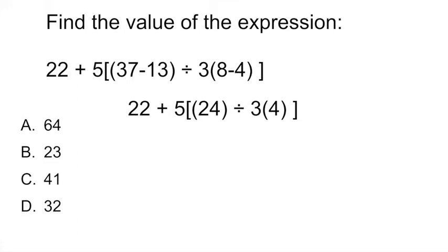The second thing on order of operations was exponents. We don't have any. And then multiplication. So we're going to multiply that 3 times 4 inside the parentheses. That gives us 12. And then after the M of PEMDAS comes division. So we're going to divide that 24 by that 12, which gives us 2.